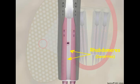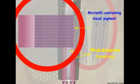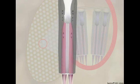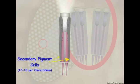Rhabdomeres consist of parallel microvilli containing light-detecting visual pigment molecules embedded into their plasma membranes. Light entering the cornea and cone of an ommatidium is focused on and detected by visual pigments embedded in the rhabdomere membranes of the retinula cells. Retinula cells are surrounded by 12 to 18 secondary pigment cells so that each ommatidium can be functionally isolated from its neighbors.